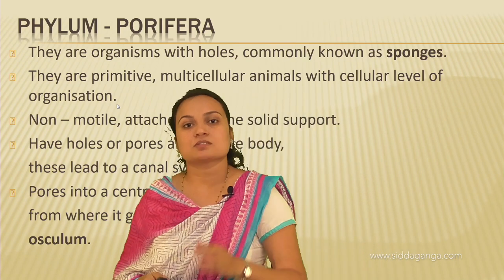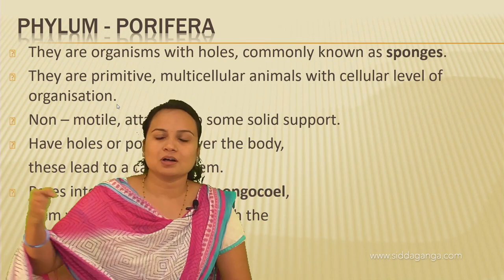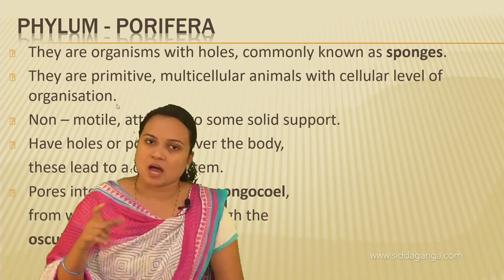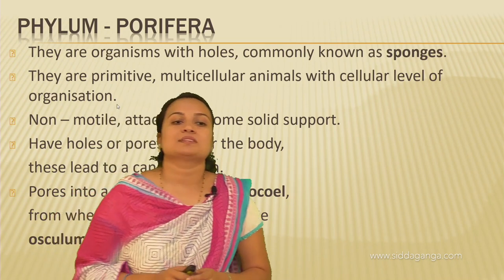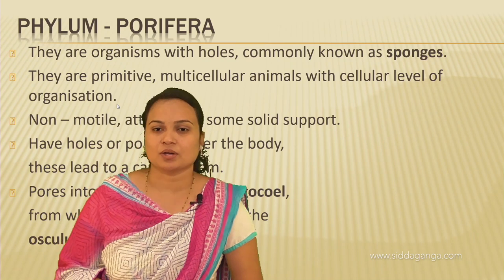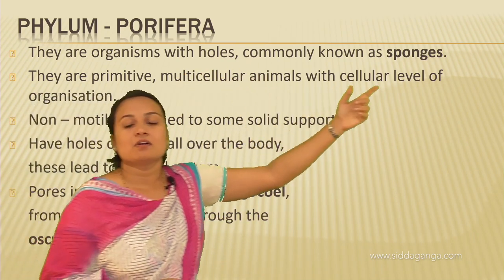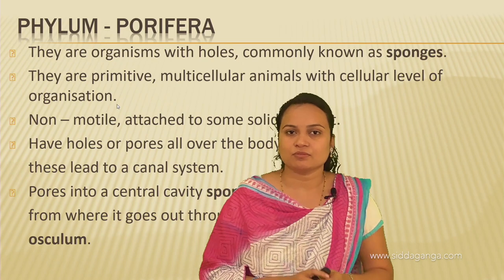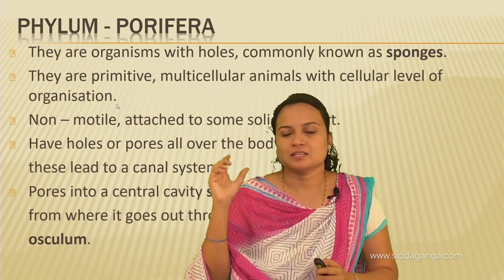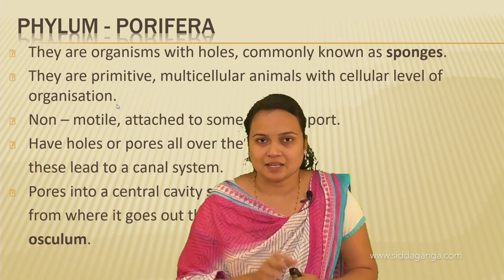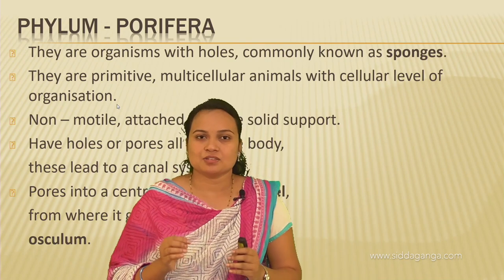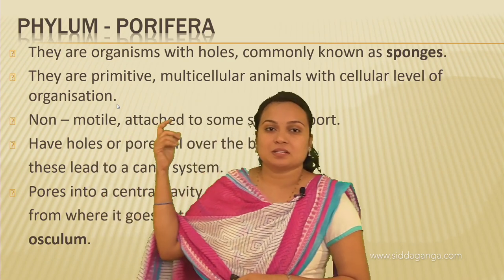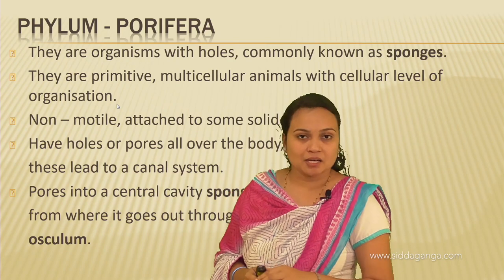Porifera have holes or pores all over the body. These pores lead to a canal system responsible for transportation of dissolved oxygen and food through water. If you see the diagram, there are pores all over the body of the Porifera organism. These pores are called porocytes.